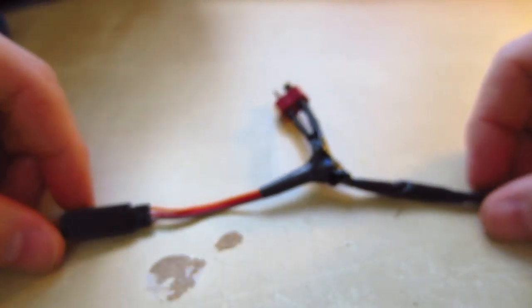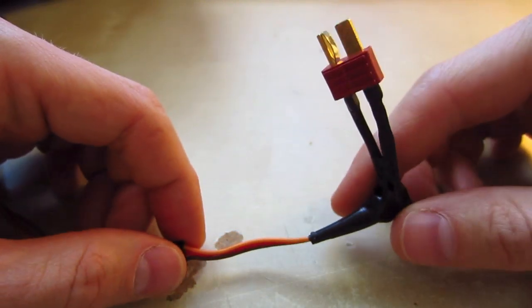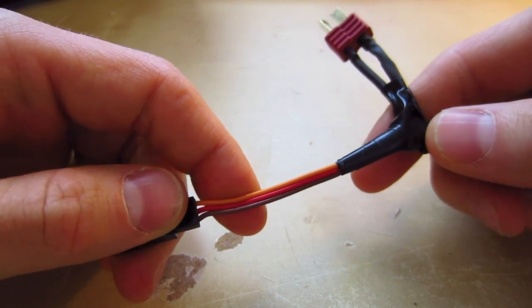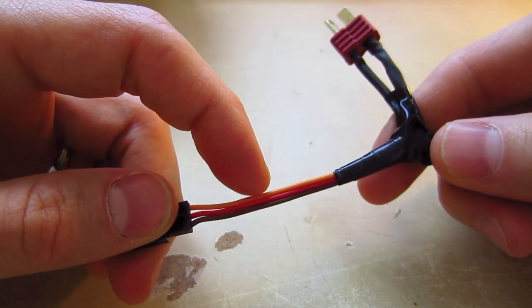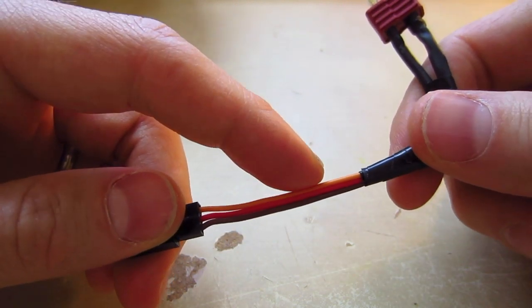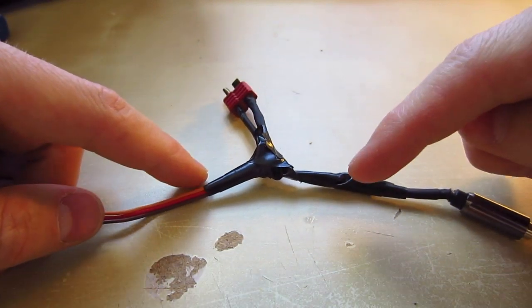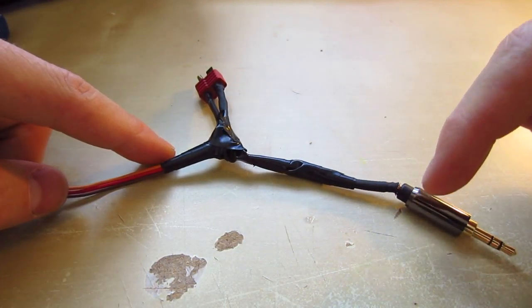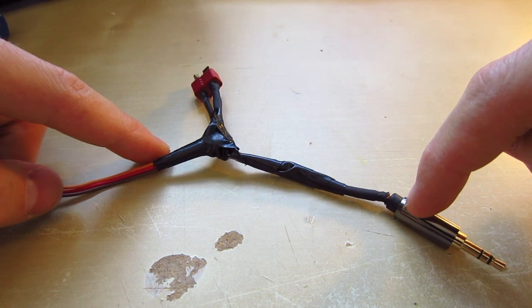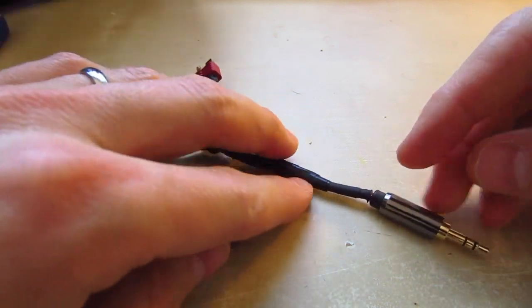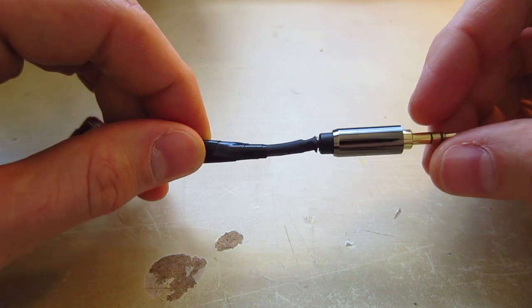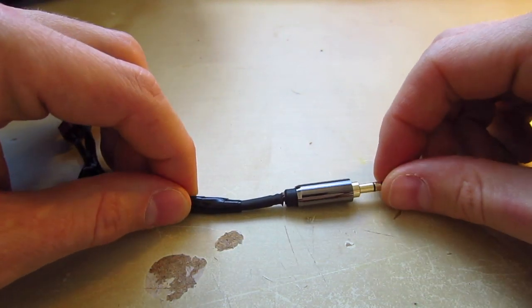So what you need to do is wire this up so that this yellow orange wire here, which is carrying PPM, is going to the wire in here which is carrying your signal, which in my case was an orange wire. So when you open this up, I'll attach some pictures here.